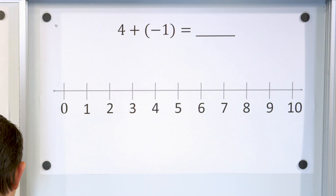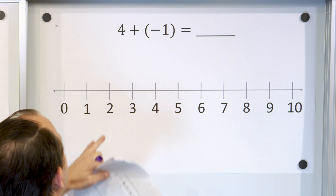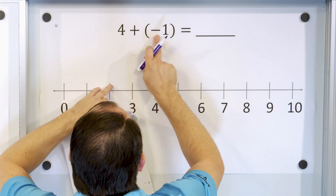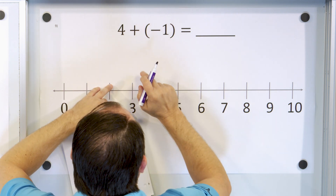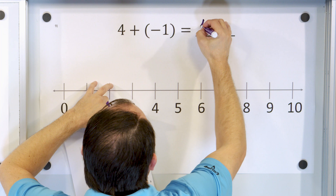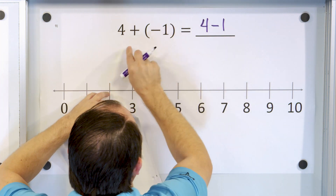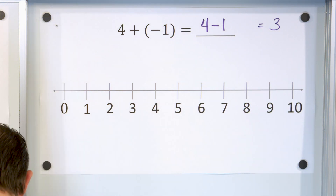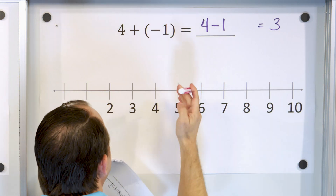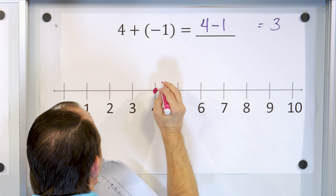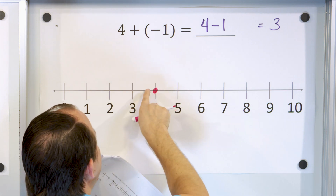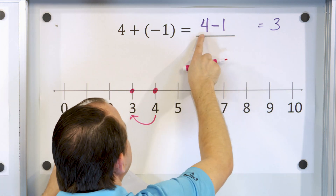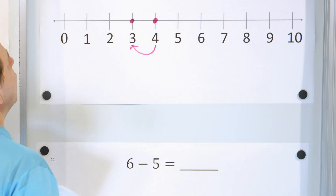Next problem — only two more. Four plus negative one. Here we're adding a negative number. When you have two opposite signs next to each other — adding the opposite — you just change it into subtraction: four minus one. These are the same thing, and four minus one is three. On the number line: four dollars, I'm adding to it, but not more money — I'm adding debt — so I slide to the left, landing on three. Same as four going down by one to three.